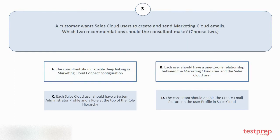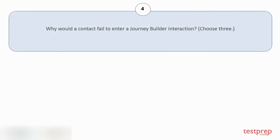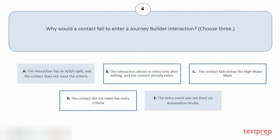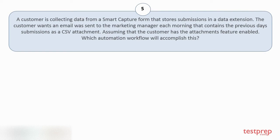The correct answers are option A and B. Question number four: Why would a contact fail to enter a Journey Builder interaction? Choose three. Options: A) The interaction has a following split and the contact does not meet the criteria. B) The interaction allows re-entry only after exiting and the contact already exists. C) The contact falls below the high water mark. D) The contact did not meet the entry criteria. E) The entry event was not fired via Automation Studio. The correct answers are options B, C, and D.